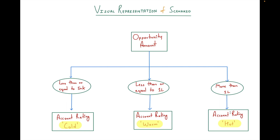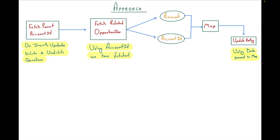The approach: since we need to update Account Rating based on Opportunity amount, the trigger will be on the Opportunity object. We'll also need the Account ID, so first we fetch the parent Account ID of each opportunity on every operation — insert, update, delete, and undelete. Next we fetch all related opportunities using that Account ID into a list, store the amount and Account ID in a map, and finally update the account rating by applying checks on the map values.